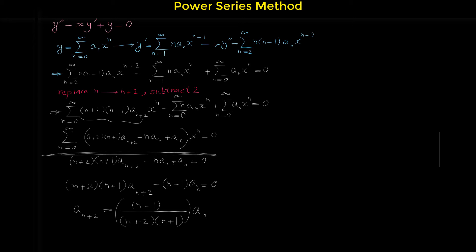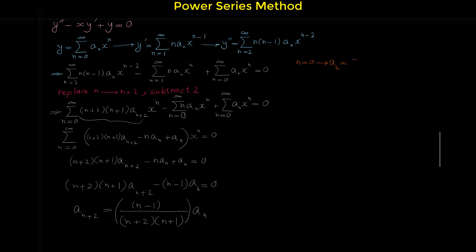In this relation n starts from zero. Plugging in n equals zero: a₂ equals zero minus one over two times one, so a₂ equals negative one over two times a₀. Plugging in n equals one: a₃ equals one minus one, which is zero in the numerator, so a₃ equals zero.